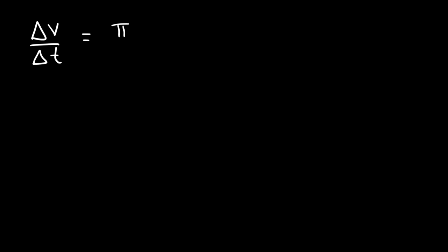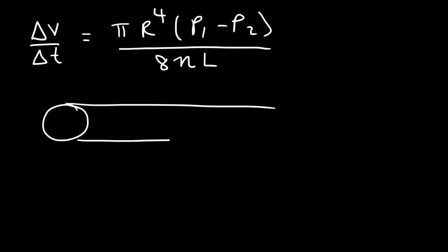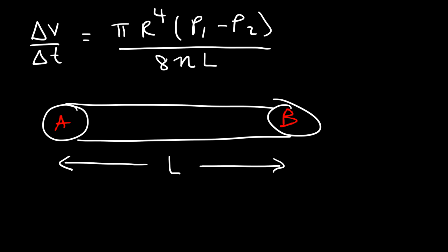Poiseuille's law states that the volume flow rate is equal to pi times the radius to the fourth power, multiplied by the pressure difference, divided by 8 times the coefficient of viscosity, represented by the symbol eta, multiplied by the length of the pipe. So let's consider points A and B. L represents the length between those two points of interest. At point A, we have pressure 1. At point B, pressure 2. R is the radius of the pipe.